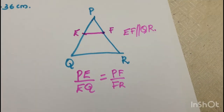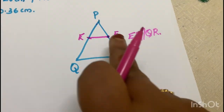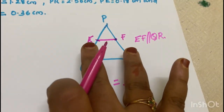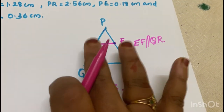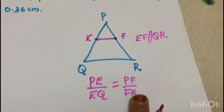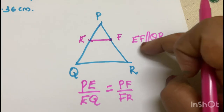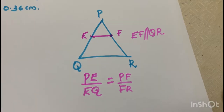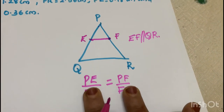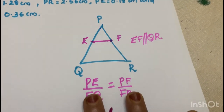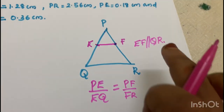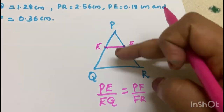For the Converse of Basic Proportionality Theorem: if the two sides of a triangle are divided in the same ratio, we say that these two lines are parallel. So we check that these sides have the same ratio — and that's why these two sides being in the same ratio means the two lines are parallel.